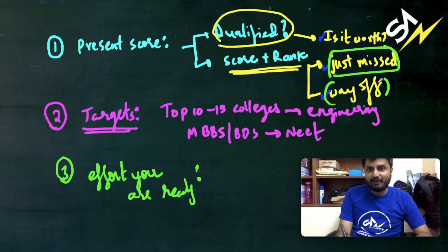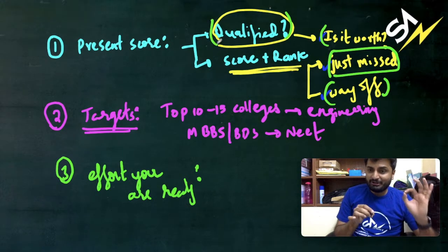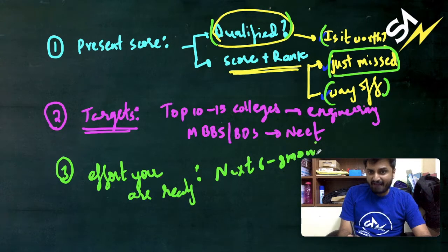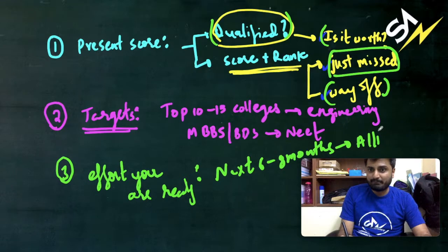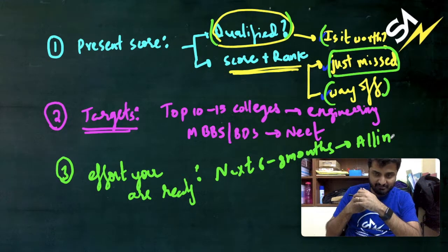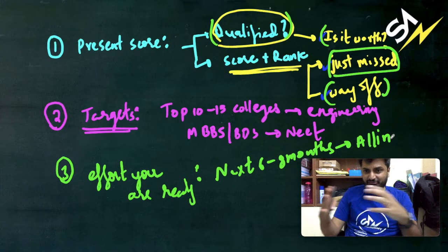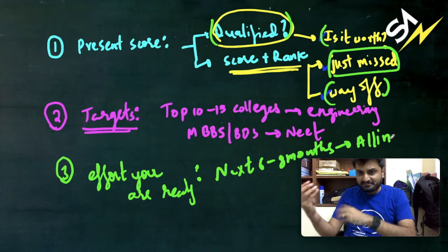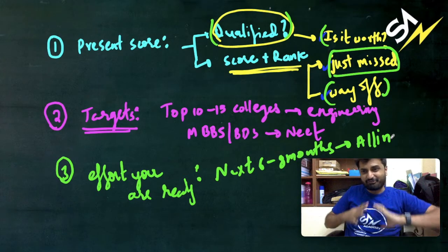Those who are way off or those who have not qualified, you need to ask yourself whether the next six to eight months you have to go all in, whether you have that capability of going all in. All in in the sense, you need to make a lot of sacrifices, you need to put in that effort. You need to join a coaching center, and not just about joining a coaching center, you need to put in that extra effort even at home.